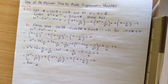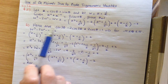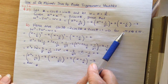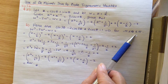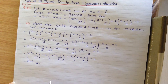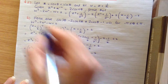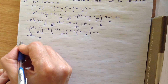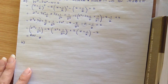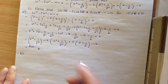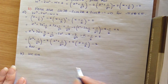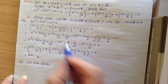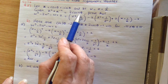Now for part B. Part B says: hence solve cos 3 theta minus 2 cos 2 theta plus 2 cos theta minus 1 equals 0, for minus pi less than or equal to theta less than or equal to pi. We are given in the question that z to the n plus z to the minus n is equal to 2 cos n theta.